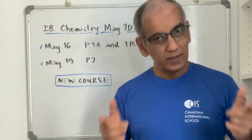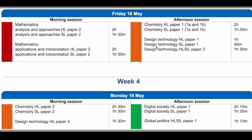On Friday the 16th of May, HL students will be taking paper 1A and 1B for two hours in the afternoon. SL students will take the same two papers, but your duration will be one hour 30 minutes. Then you'll have the weekend to study really hard and come back for the all-important paper 2, which carries 44% of the final score in this course.